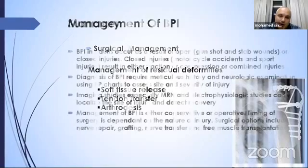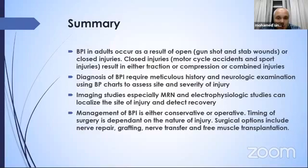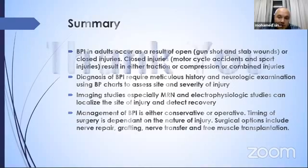In summary, brachial plexus injury in adults occurs as a result of open or closed injuries. Closed injuries are usually motorcycle accidents and sport injuries, resulting in traction, compression, or a combination. Diagnosis requires meticulous history, neurological examination using brachial plexus charts, imaging — especially MRI neurography — and electrophysiological studies to localize the site and detect recovery. Management is either conservative or operative; timing of surgery is dependent on the nature of injury. Surgical options include nerve repair with graft, nerve transfer, and free muscle transplantation.